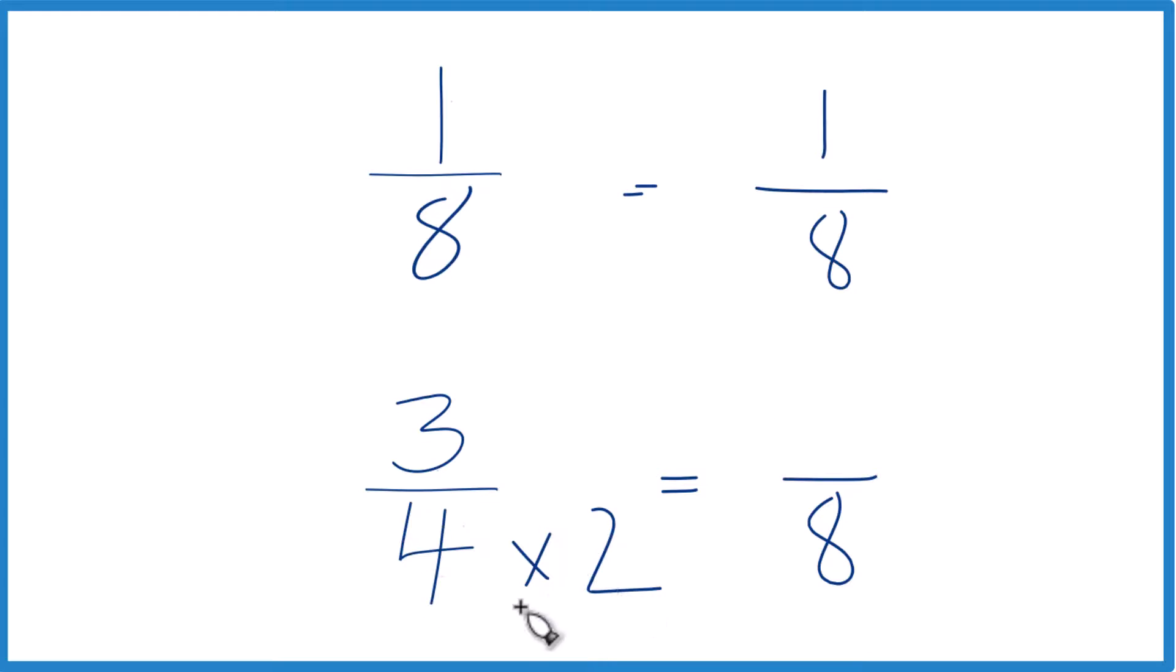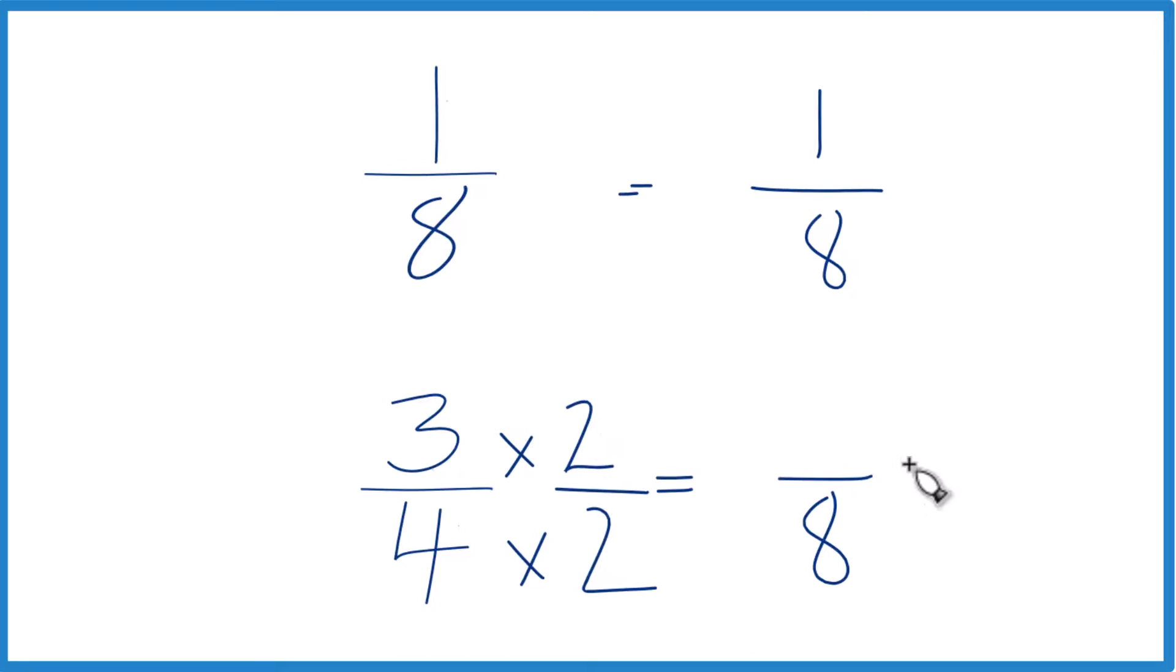Since we multiply the denominator by 2, let's multiply the numerator by 2 as well, because 2 over 2, we're just dividing 2 by 2. We get 1. So multiplying by 1, it doesn't change the value, just the way it's written.